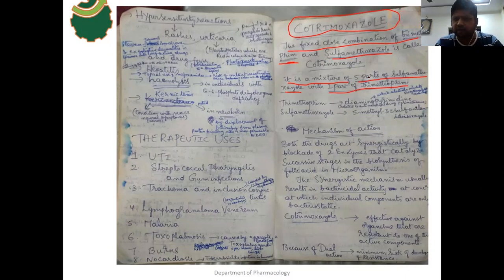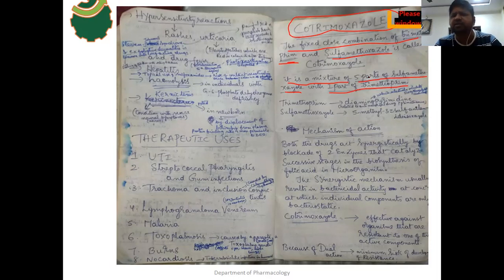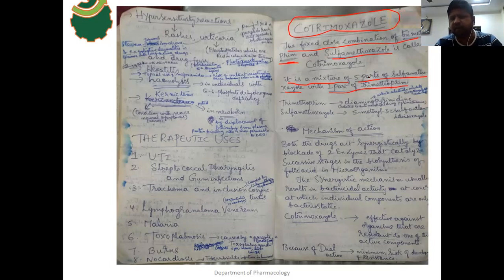Due to the emergence of bacterial resistance and the availability of better and safer drugs than cotrimoxazole, its current utility is quite limited. For most cases now, we are using amoxicillin combinations and cephalosporins like cephalexin, cefotaxime, and cefpodoxime — drugs that are safer and cover a broad spectrum of bacteria. That's why the utilization of cotrimoxazole is limited nowadays.